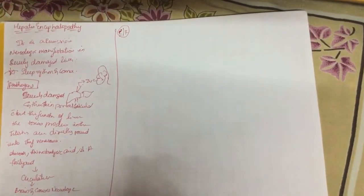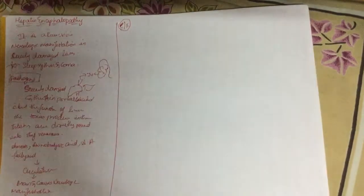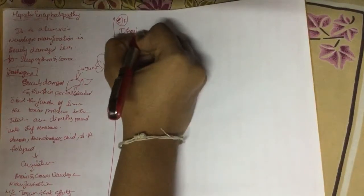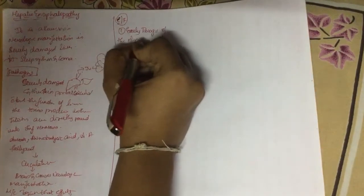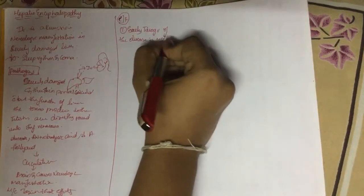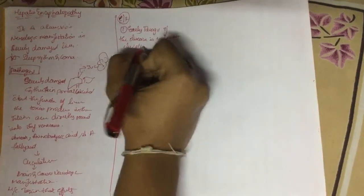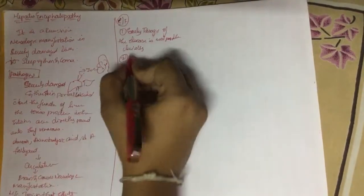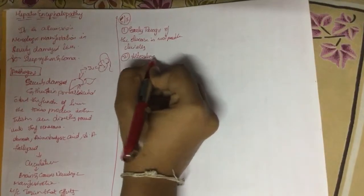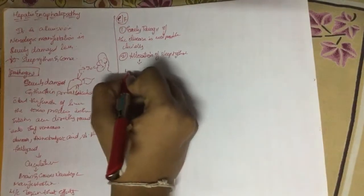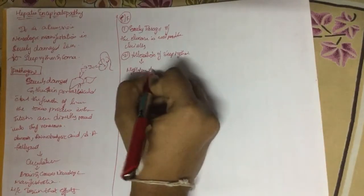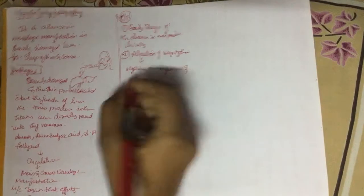Now let us see about clinical features. The disease cannot be clinically recognized early. Early recognition of the disease is not possible clinically. Due to disturbance in liver metabolism, there is alteration of sleep rhythm. This alteration in sleep rhythm leads to nighttime awakefulness and daytime drowsiness.